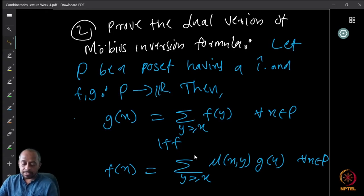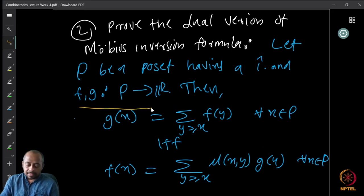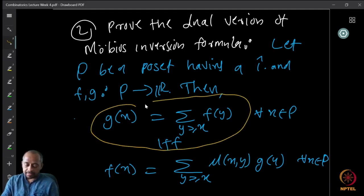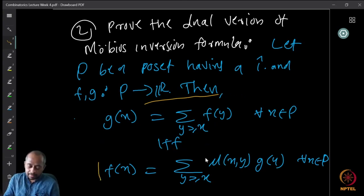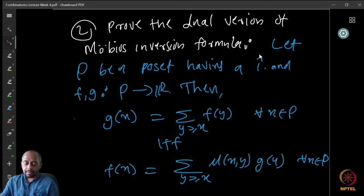Another homework is to prove the dual version of the Möbius inversion formula. Suppose P is a poset having a one. Let f and g be real-valued functions on P. Then g(x) = Σ_{y ≥ x} f(y) if and only if f(x) = Σ_{y ≥ x} μ(x, y)·g(y). Note the reversed order and that P has a one here, not a zero. This is called the dual version of Möbius inversion.